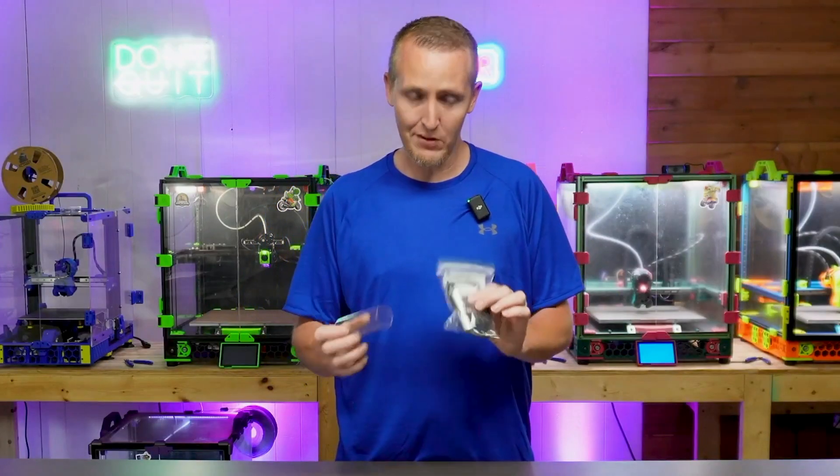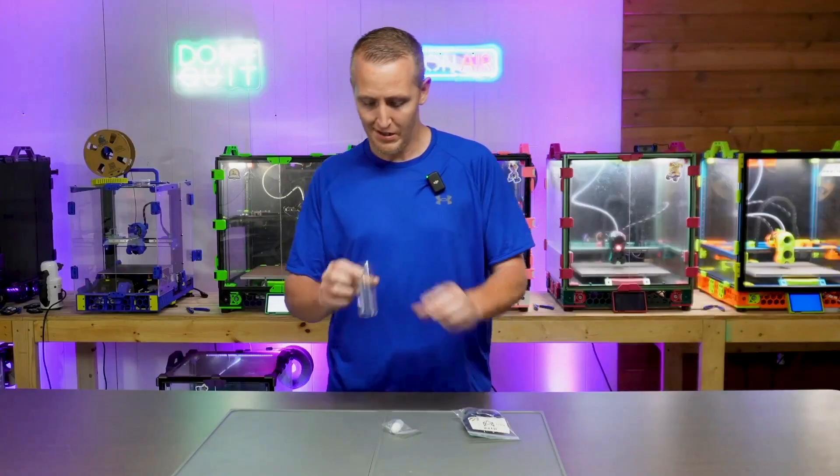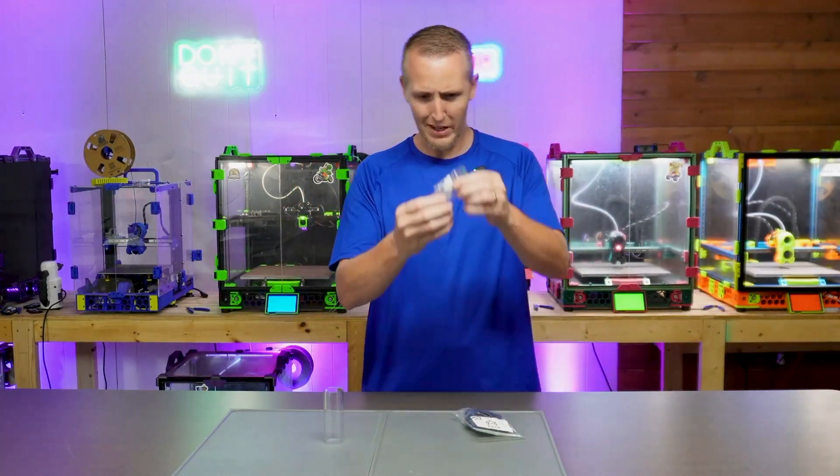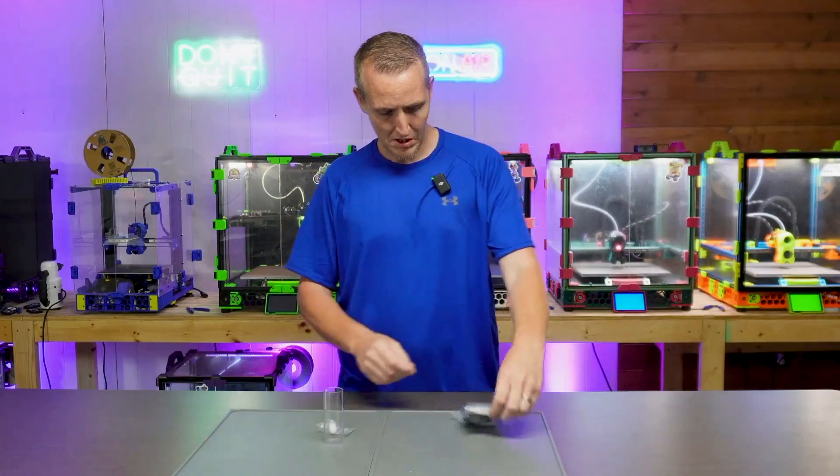This kit comes with everything except for the 3D printed parts. It's got this little glass tube here. I'm not sure we're going to get to that. Looks like a little thing of oil. Let's see what's inside.